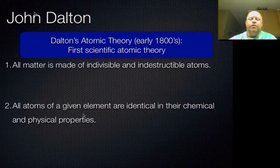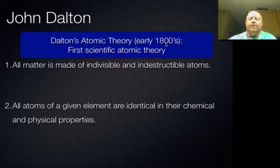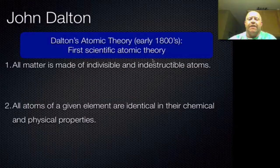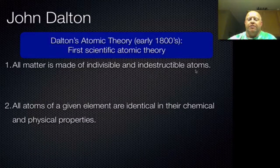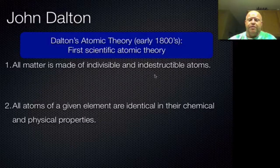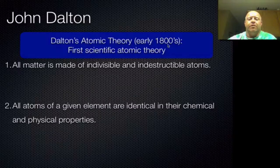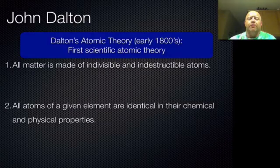Moving forward to the early 1800s, we get the first scientist who really talked about atomic theory. John Dalton is credited with the first scientific atomic theory, and his atomic theory had five parts to it. The first two parts are on the screen. Number one: all matter is made of indivisible and indestructible atoms. In the early 1800s, as far as they knew, this was a true statement and held up to all the research.